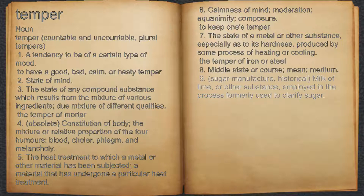9. Sugar manufacture, historical. Milk of lime, or other substance, employed in the process formerly used to clarify sugar.